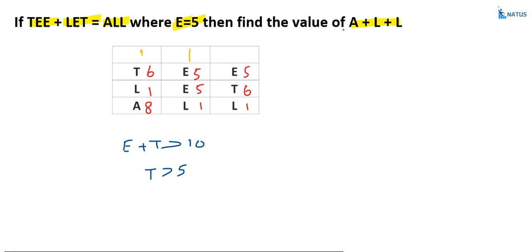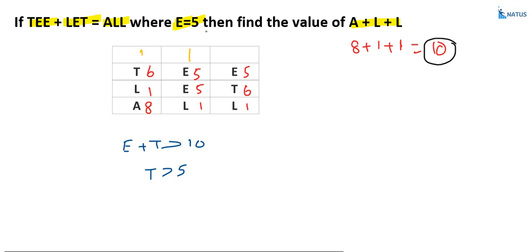Now the question asks: what is the sum of a, l, l? The value of a is 8, the value of l is 1, and the value of l is 1. So the sum is 8 plus 1 plus 1, which equals 10. Therefore, if t plus LET equals ALL where e equals 5, the value of ALL is 10.